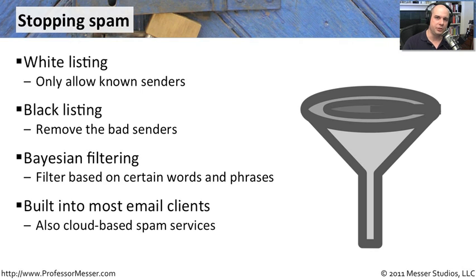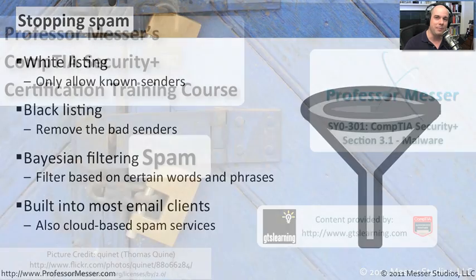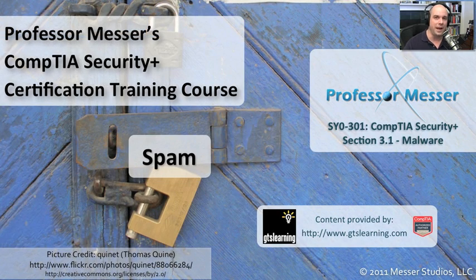These days, spam filters are built right into our email clients. We have sometimes whitelist, blacklist, and Bayesian filtering all built into what we're doing on our desktop — maybe built into our organization's Outlook Exchange front end, or maybe we have a third party that does all of our spam filtering for us. They're almost always using a number of these different technologies together, because in reality you have to use all of them working in conjunction to really keep all of the noise and all of the spam out of your inbox.